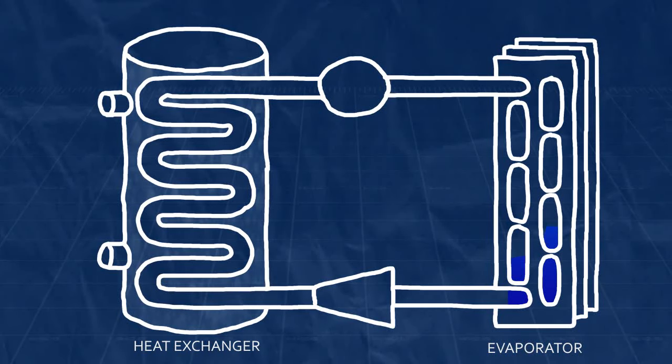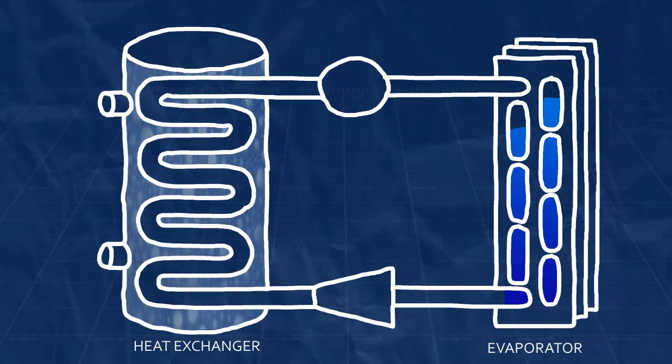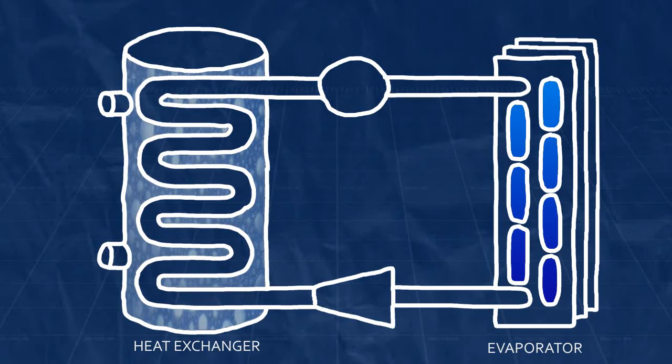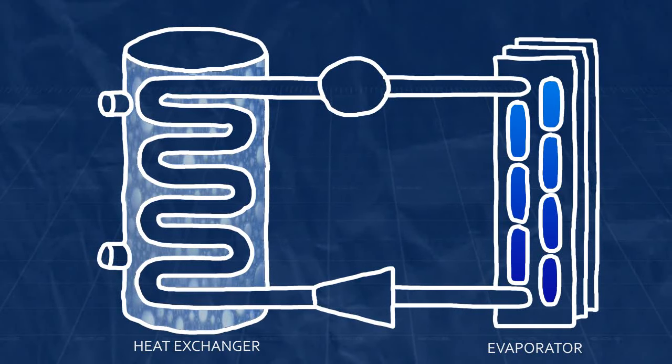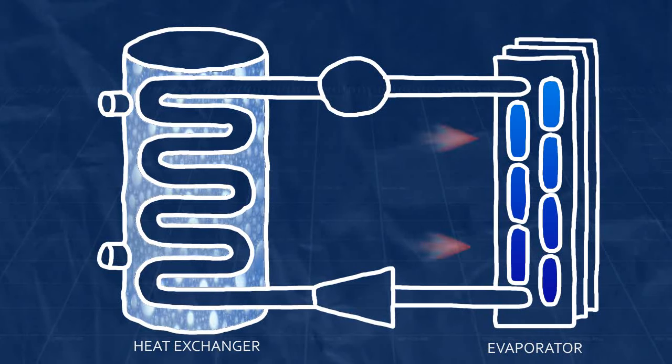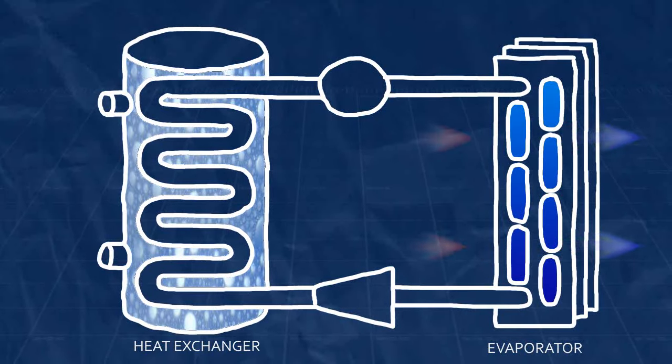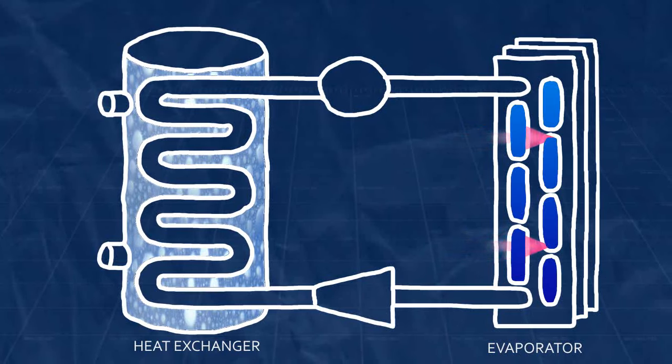In the beginning of a cycle, the refrigerant is in a cold, low pressure, liquid gaseous state flowing through tubes that are exposed to room air. It is colder than the room air, so the heat in the air moves to the refrigerant. This is because heat always wants to move from warmer things to cooler things.